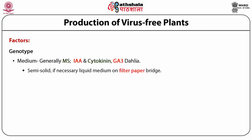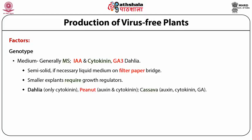In the case of dahlia, gibberellic acid is also required. Semi-solid medium is generally used, and if the shoot tip is sensitive to agar, liquid medium on a filter paper bridge can be used. Smaller explants require growth regulators, and the requirement may vary — for example, dahlia requires only cytokinin, peanut requires auxin and cytokinin, and cassava requires auxin, cytokinin, and gibberellic acid.